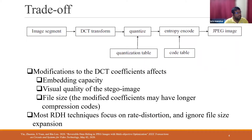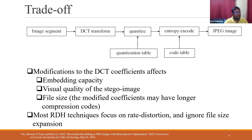The general framework for transform domain techniques has an information segment: you bring it in, work out the transform, then quantize, then entropy encode — that's where you get the image. Any change in any of those coefficients has an effect in terms of increased file size. It may introduce embedded capacity depending on how the coefficient was modified, since sometimes changes are made so that original coefficients can be recovered. Some changes serve dual purposes: hiding secret information and enabling reversibility.